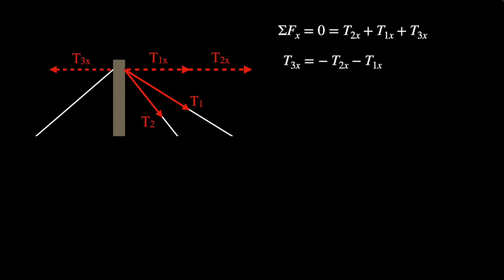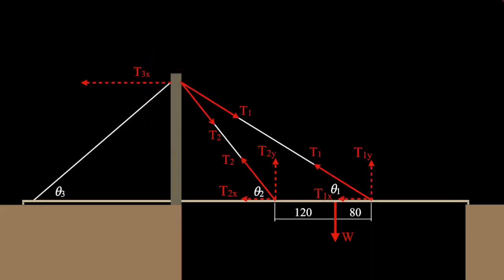So all those magnitudes added up should equal to zero, and I can rearrange those and get a value for T3x. So now we've got that value there, I can do a little bit of trig again and give me a value for T3. So now I've got the tension in all three.